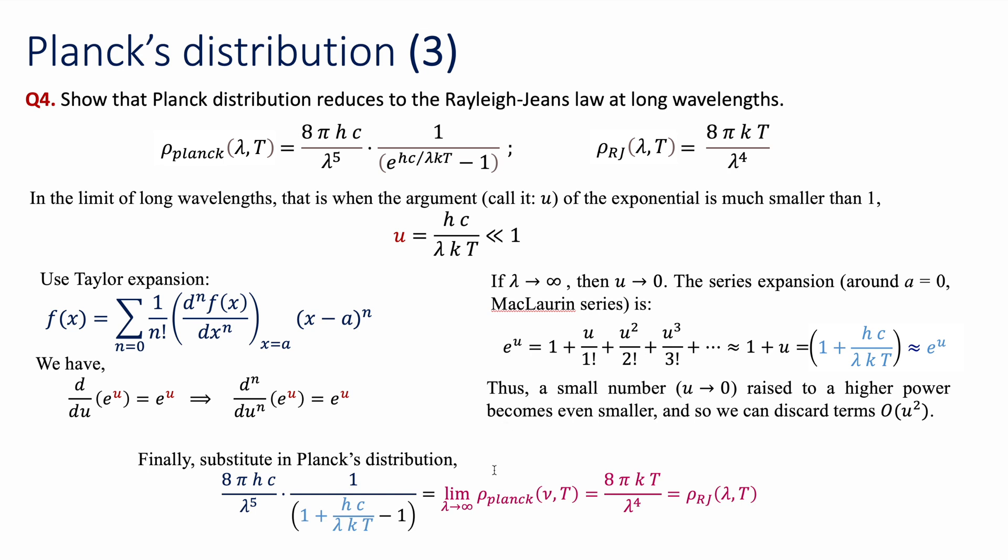And that's it. Using Taylor expansions, looking at the behavior at the extremes, we can reduce Planck's distribution into Rayleigh-Jeans distribution. Please let me know if you have any questions, and I'll talk to you later.